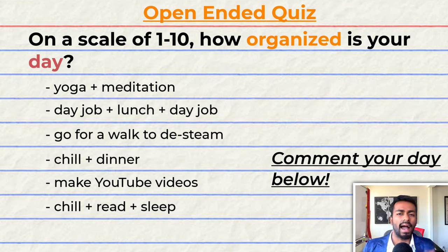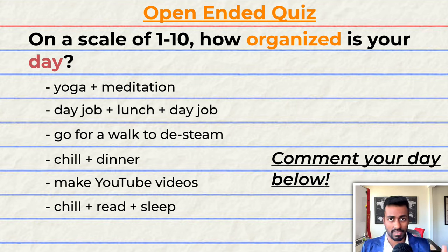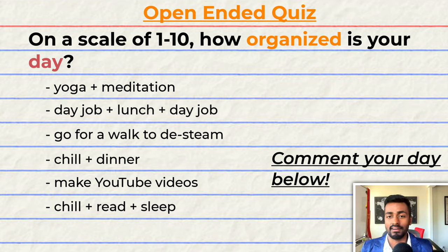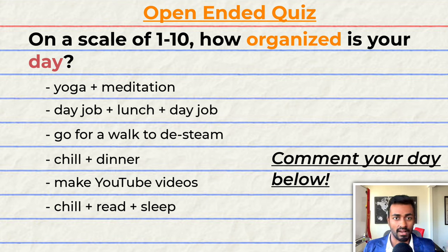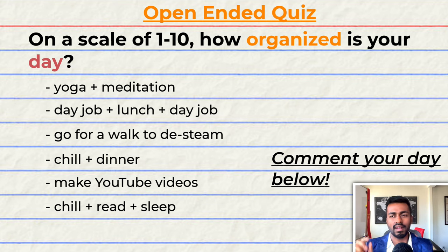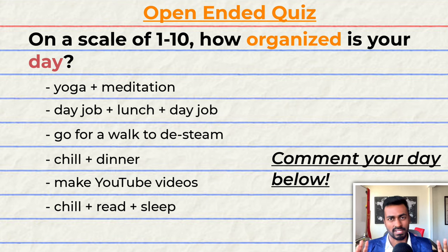Do you have different time slots allocated for certain activities in the day, or is your day typically just more free-flowing? I personally would rate myself as an 8 on a 10 because I have activities that I do every day. Though I don't have an absolute time bucket for everything, I try to get everything done in more or less the same order around similar times of the day.